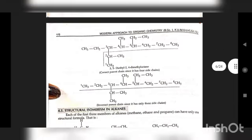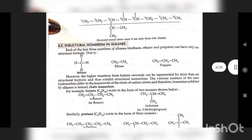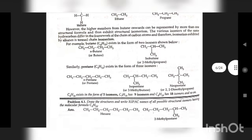While naming a compound, if two equally long chains are possible but differ in the number of side chains, the chain having the largest number of side chains is selected as the parent chain. For example: 3,5-diethyl-2,4-dimethyloctane. Structural isomerism in alkanes: The first three members — methane, ethane, and propane — can have only one structural formula. Higher members from butane onwards can be represented by more than one structural formula, exhibiting chain isomerism. For example, butane exists as n-butane and isobutane; pentane exists as n-pentane, isopentane, and neopentane.